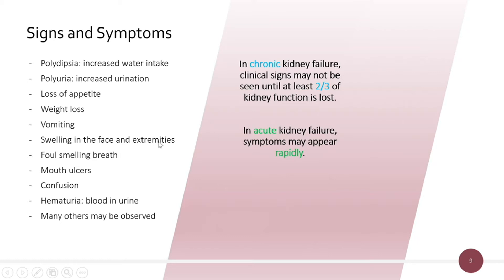In chronic kidney failure, these signs may not be seen until two-thirds of kidney function is lost, so the disease can progress quite far. In acute kidney failure, these symptoms may come about rapidly because the loss of function is also rapid.